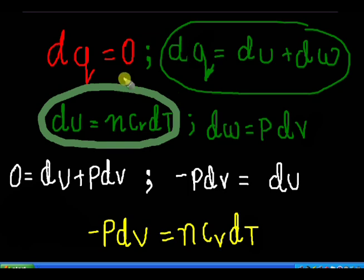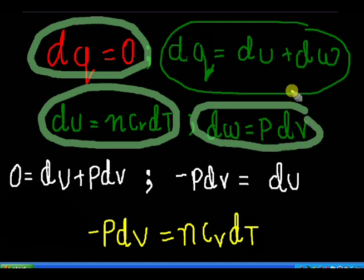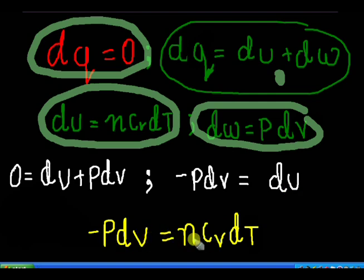I am substituting these three values into this equation. So I am getting zero is equal to DU plus P dV. Rearranging the equation, minus P dV equals DU. Substituting the value of DU, we get minus P dV equal to nCv delta T.